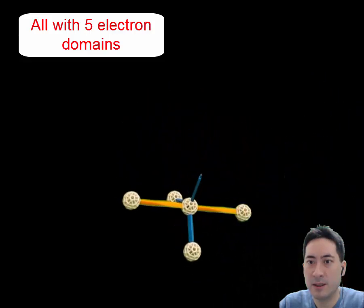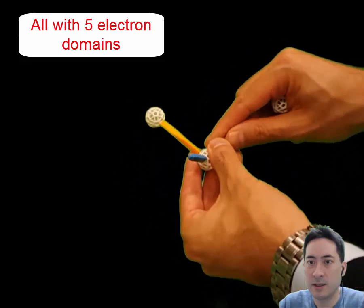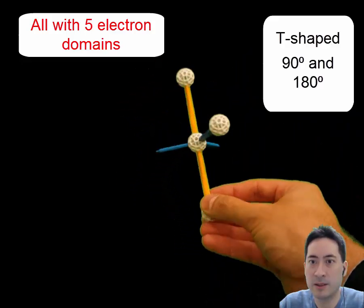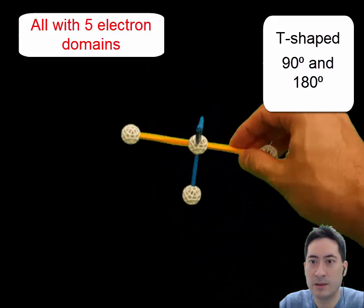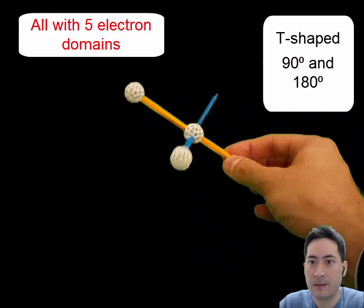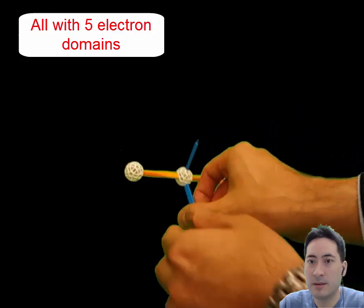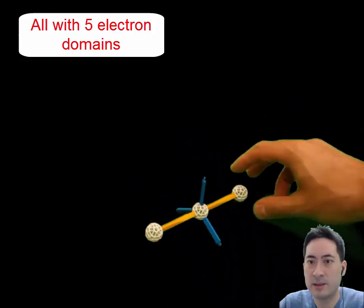Please note the free electron pairs, of course, have the most repulsion and the least repulsion will happen around the center, the blue ones. I'll talk about that in a second. So it's a T-shaped and finally you get the linear shape.